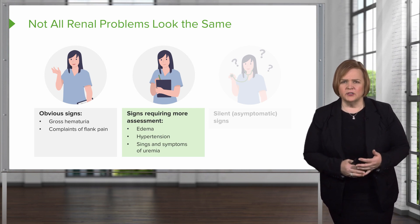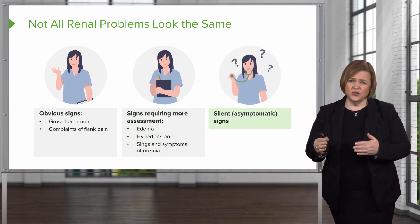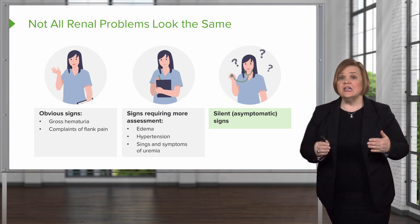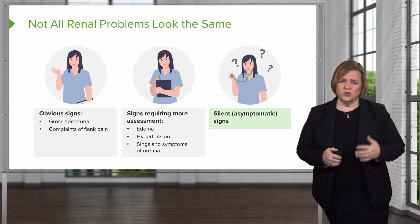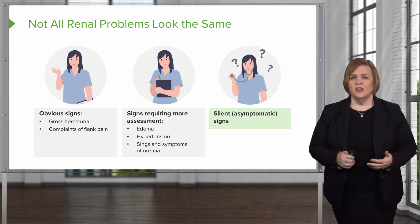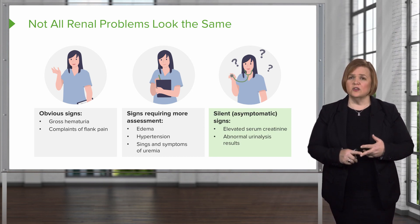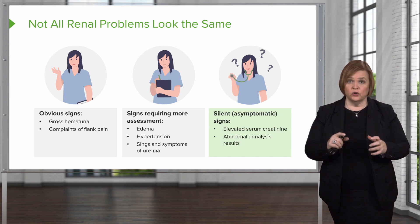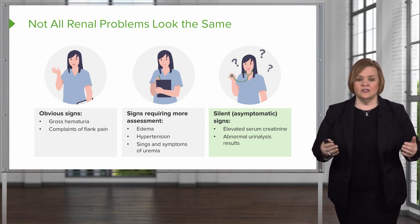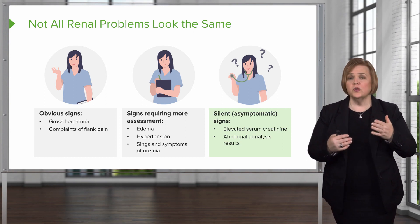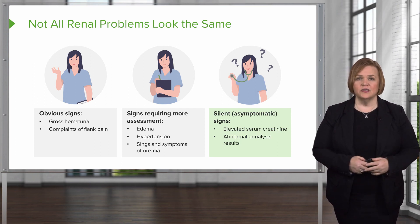We also look at things like hypertension and signs and symptoms of uremia, which would cause us to do further digging. The third category is silent — these are asymptomatic, meaning without symptoms. These are things where the patient may not even know they have a problem. We look at lab work: they might have an elevated serum creatinine concentration or abnormal findings on their urinalysis, where we take urine and do close observation, maybe even under a microscope. The main point is: some things are obvious, some things are hidden, some things need further assessment — and that's our role as part of the healthcare team.